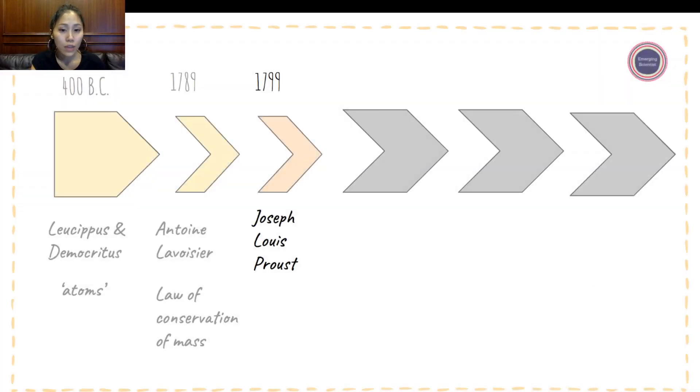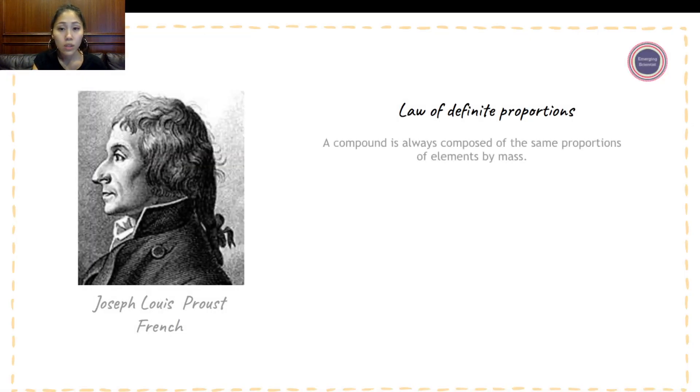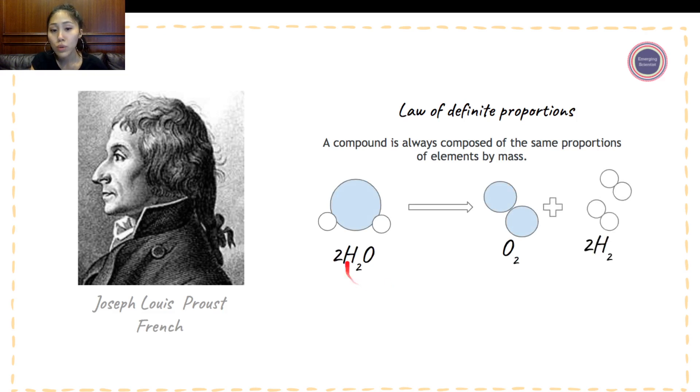In 1799, Joseph Louis Proust came up with the law of definite proportions. The definition to that means that a compound is always composed of the same proportions of elements by mass. So what does that mean? We're going to look at a decomposition of water. Two moles of water decomposes into one mole of oxygen atom and two moles of hydrogen atom. Oxygen and hydrogen in standard conditions usually are appearing in double, so they appear in dual pairs.